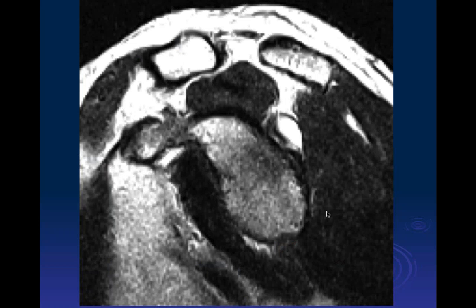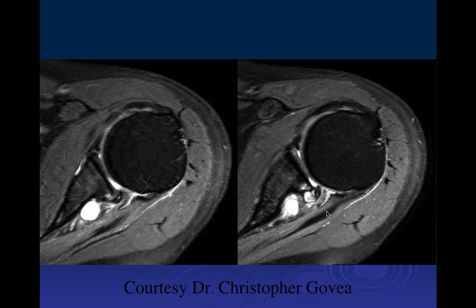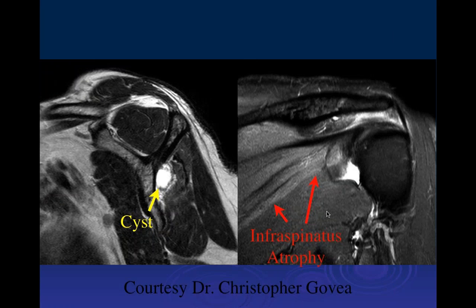Question: What would you do with this? Response: The source of the cyst is the posterior labral tear. If you go in and address the tear, you can prevent the mass effect from the cyst. Otherwise you can't do anything about it — if you don't fix the problem, the cyst will recur.